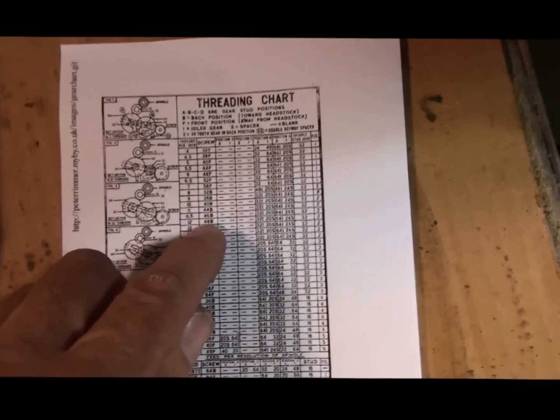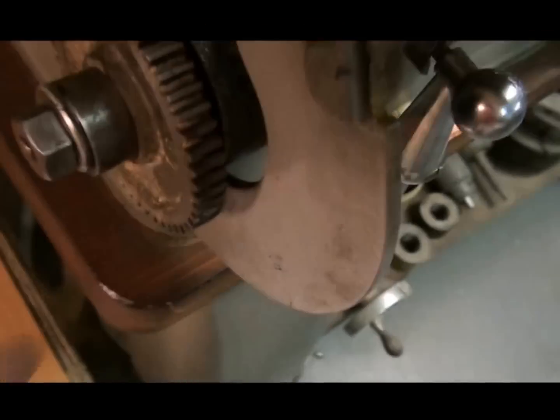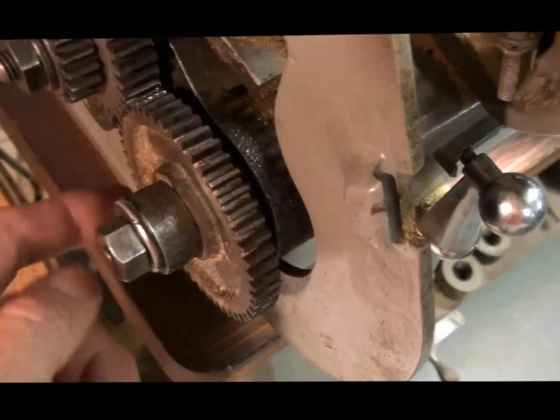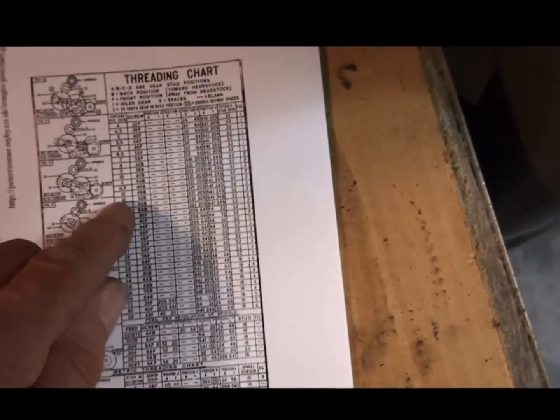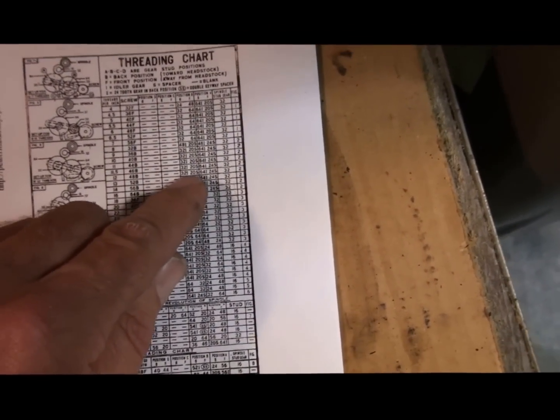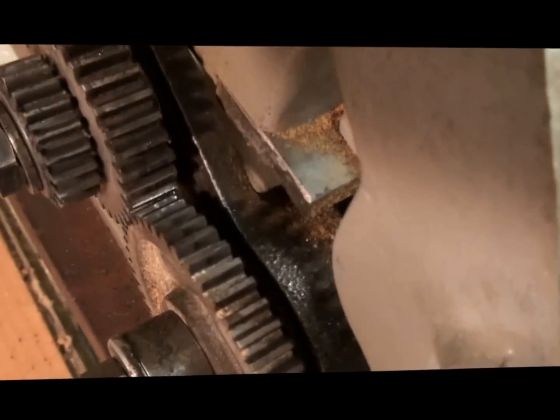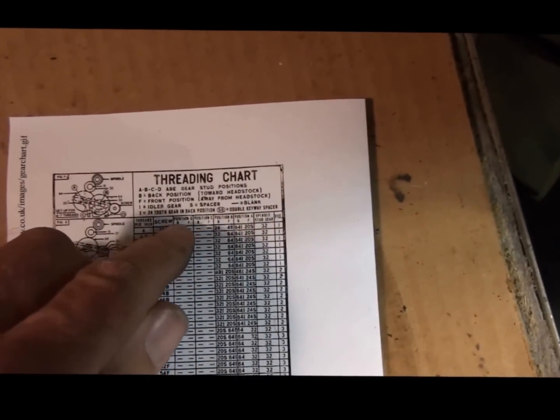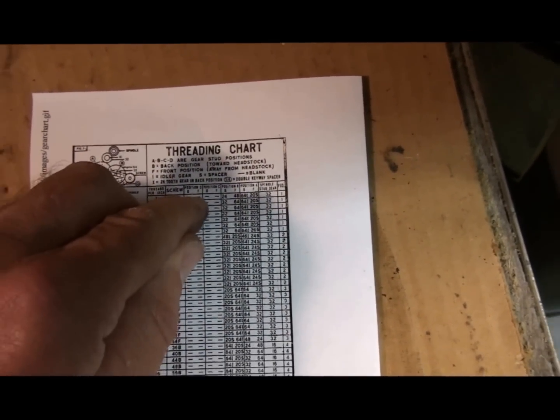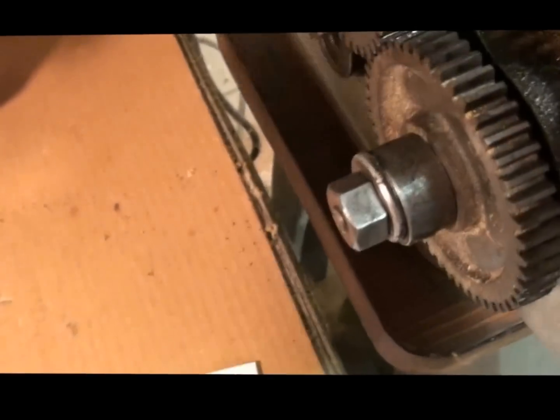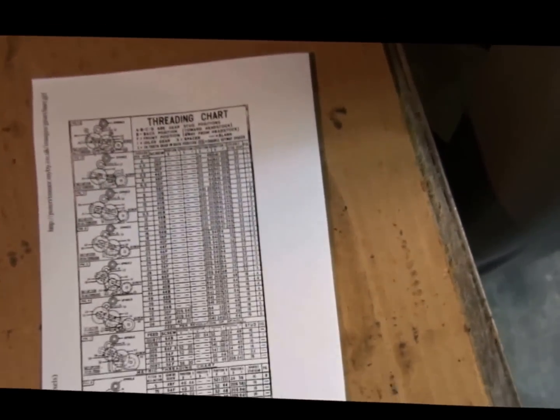me I need a 48-tooth gear on the screw. That's this one right here, so I got a 48-tooth gear on that. It tells me I need a 32-tooth gear in this position, which I have. And also, these charts also tell you if the gear is in the front or back position. Back meaning toward the headstock, front meaning away from the headstock. So you have to make sure that's right.